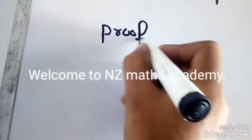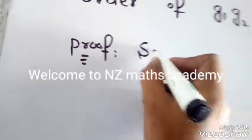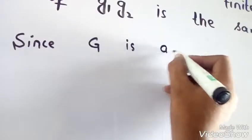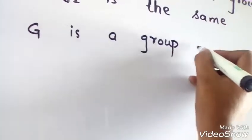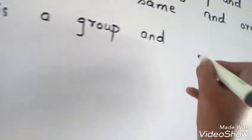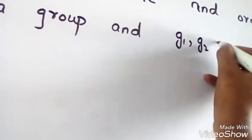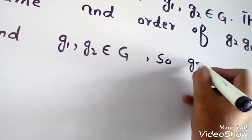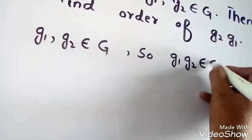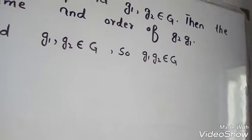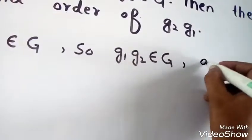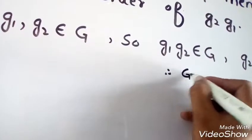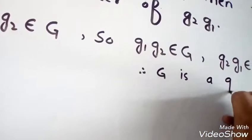Since G is a group and G1, G2 are any two elements of G, so G1·G2 also belongs to G, because G is a group. Also, G2·G1 also belongs to G, because G is a group.